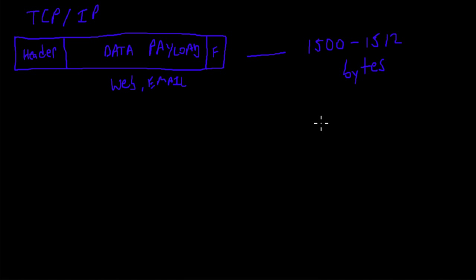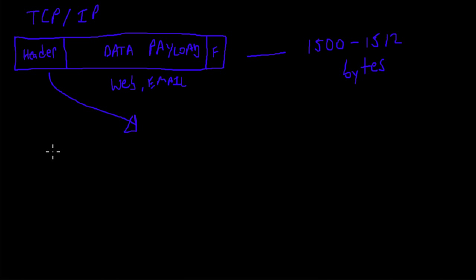Those are the three main parts. Inside the header we're going to expand things out and talk about the different parts of the header — there are several of them. One of the main ones is called a TTL, or Time to Live.